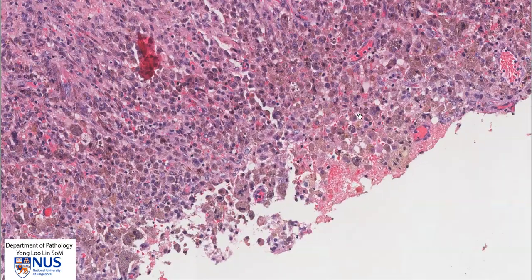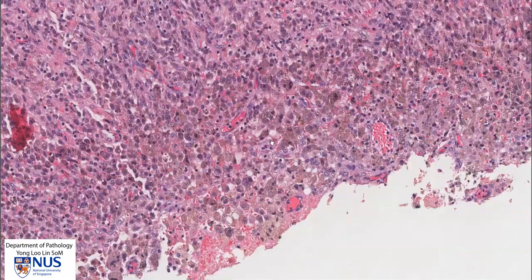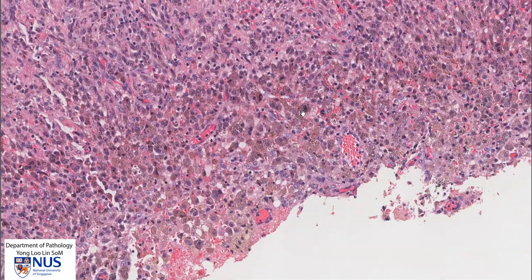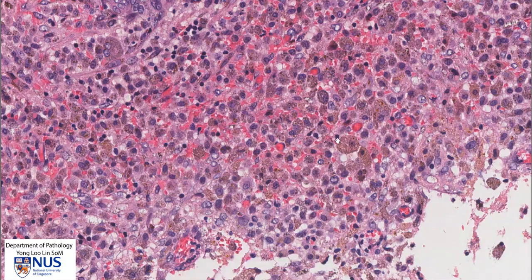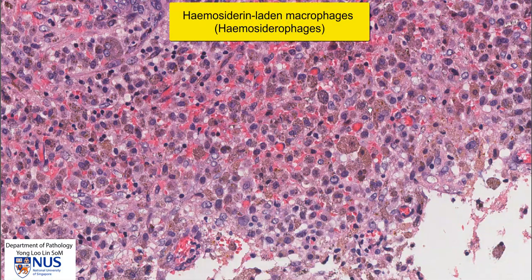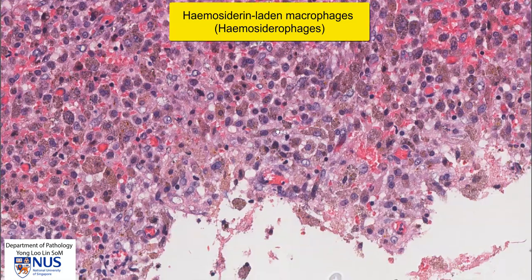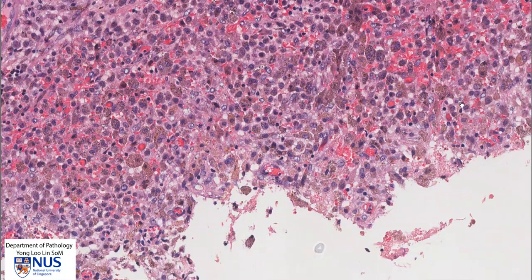We can see sheets of these macrophages which contain brown hemosiderin pigment. This is due to ingestion of the breakdown products of blood, so these are hemosiderin-laden macrophages, or hemosiderophages. Surrounding these hemosiderophages, there are still some small residual endometrial stromal cells.